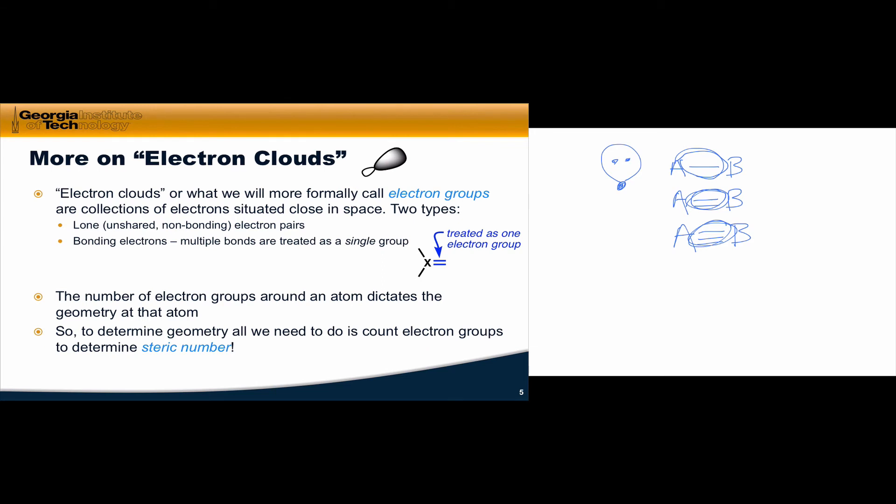So then to determine the geometry of a molecule, all we need to do is count its number of electron groups to determine the number of electron groups around the atom, or what we'll more formally call the steric number.